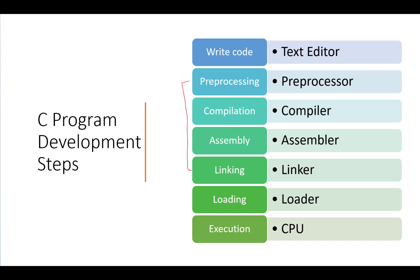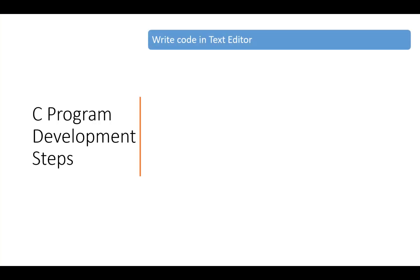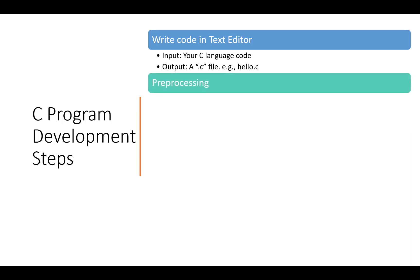Now let us look into the detail of what happens at each step. The very first step is writing the code in the text editor. You write your C code and save that file with the .c extension. Let's suppose we create a file called hello.c. After saving it, the next step will be pre-processing.